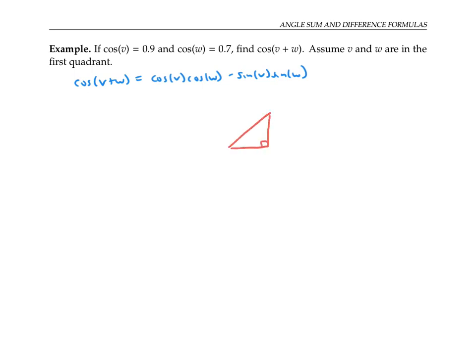And one way to do that is to draw right triangles. So here, I'm going to draw a right triangle with angle v and another right triangle with angle w. Since I know that the cosine of v is 0.9, I can think of that as 9 over 10. And I can think of that as adjacent over hypotenuse in my right triangle. So I'll decorate my triangles' adjacent side with the number 9 and the hypotenuse with 10. Similarly, since I know that the cosine of w is 0.7, which is 7/10, I can put a 7 on this adjacent side and a 10 on this hypotenuse.